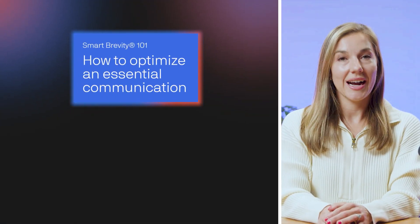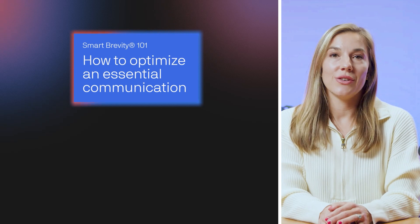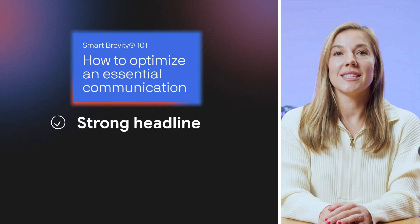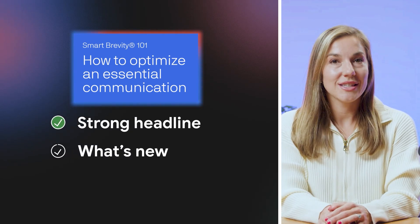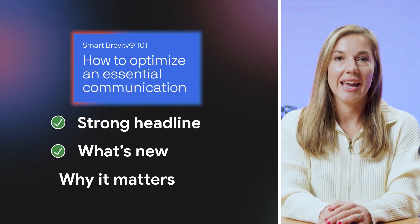So let's build one together. For my gem, I want to use the Smart Brevity framework used by Axios. This communication framework focuses on a strong headline, a what's new section, and a why it matters section. This structure ensures your message is clear, concise, and relevant for your audience. For yours, you can use any communication style or template you prefer.